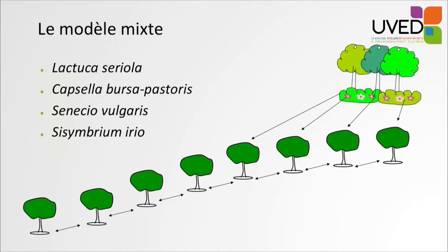There are also mixed models: around the station, the adopted pattern is that of the island and continent, but then from that point on, the seeds will travel from one tree to another. For instance, lettuce and capsella obey this model.